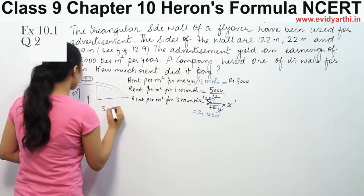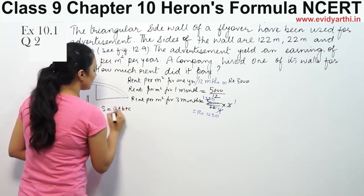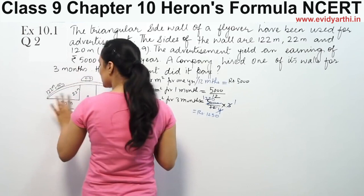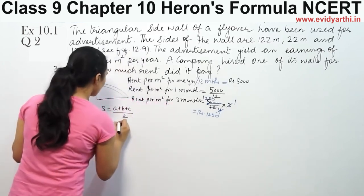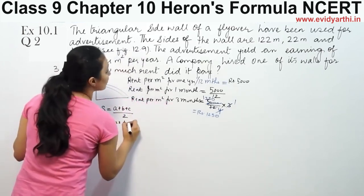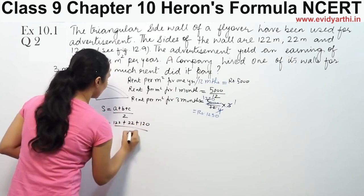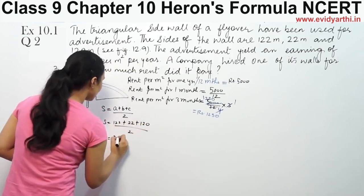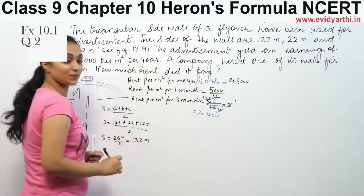So S, the semi-perimeter, is calculated using the formula S = (a + b + c) / 2. The sides are 122, 22, and 120. Adding them gives 264, divided by 2 gives S = 132 meters.